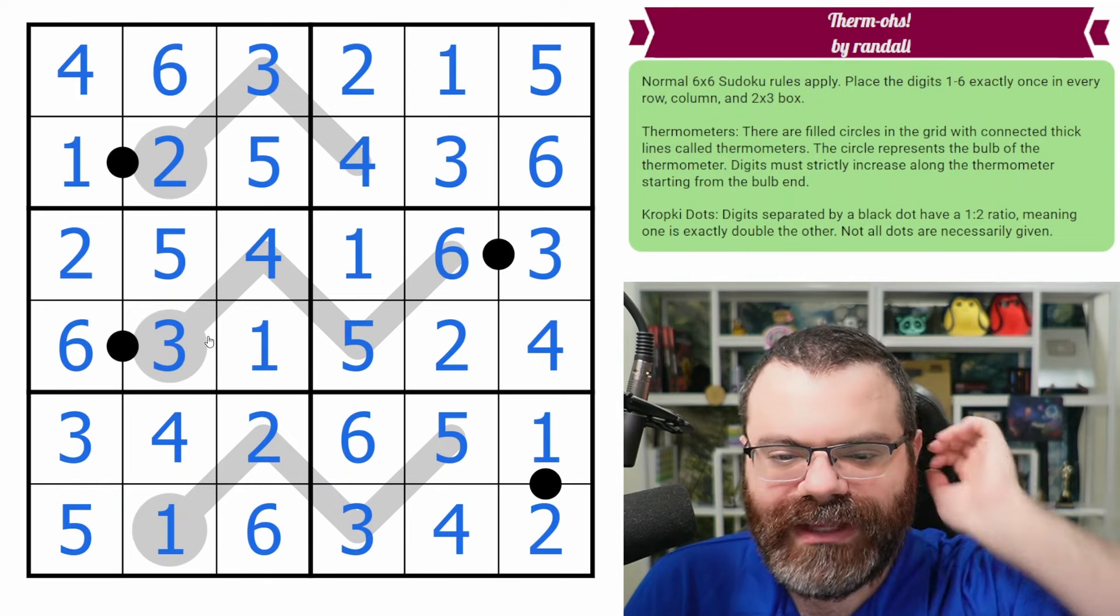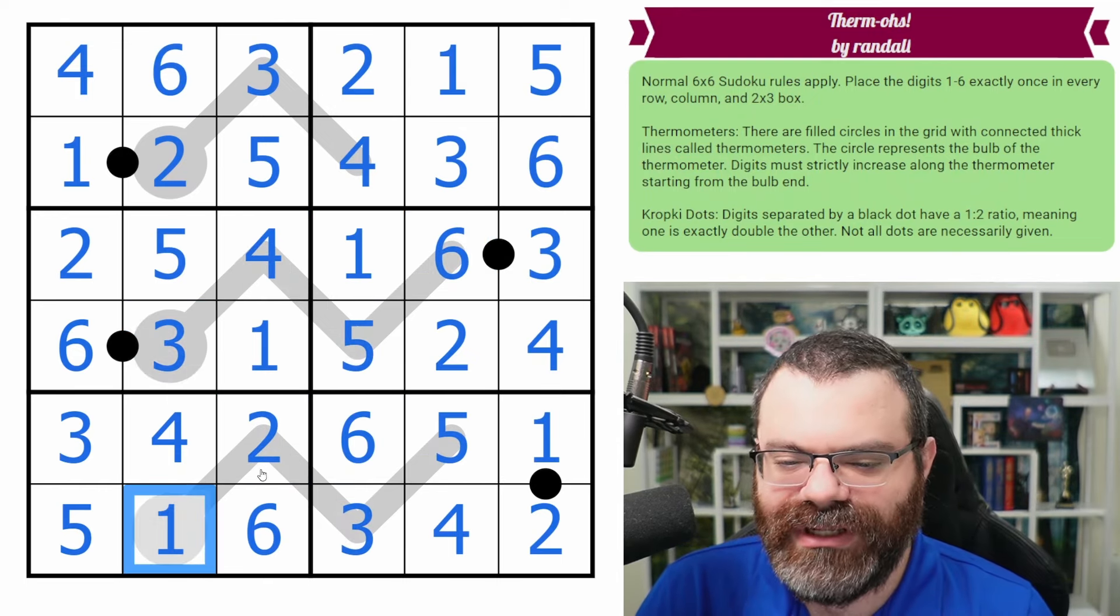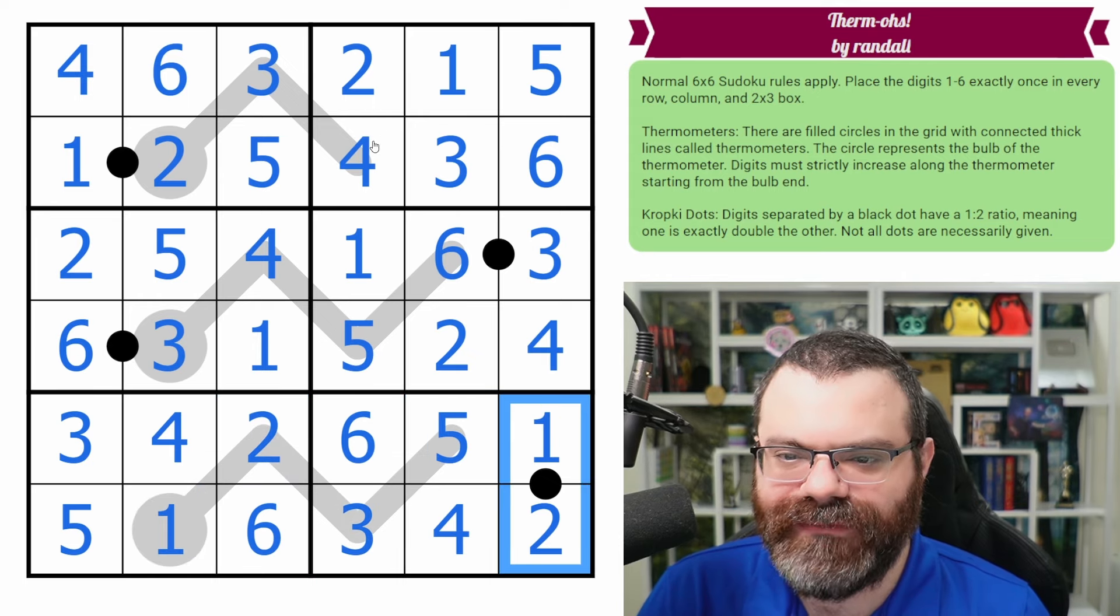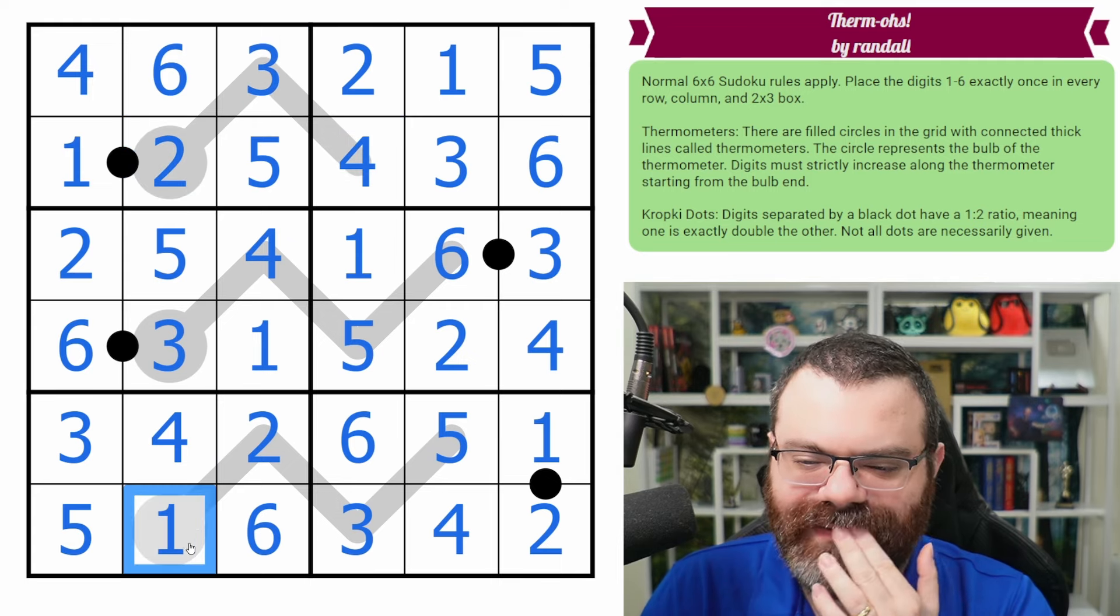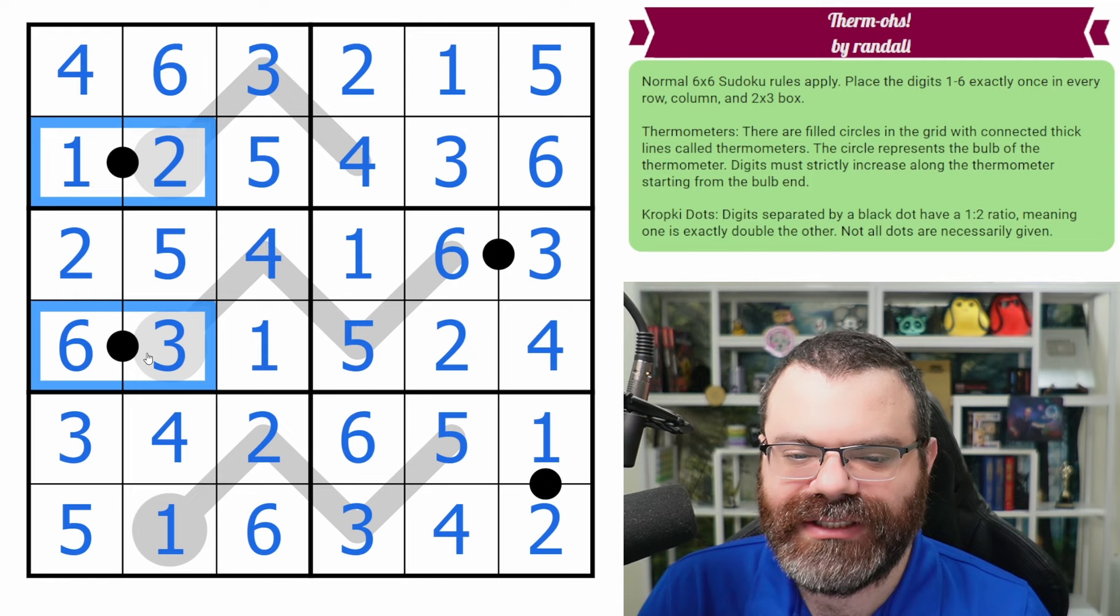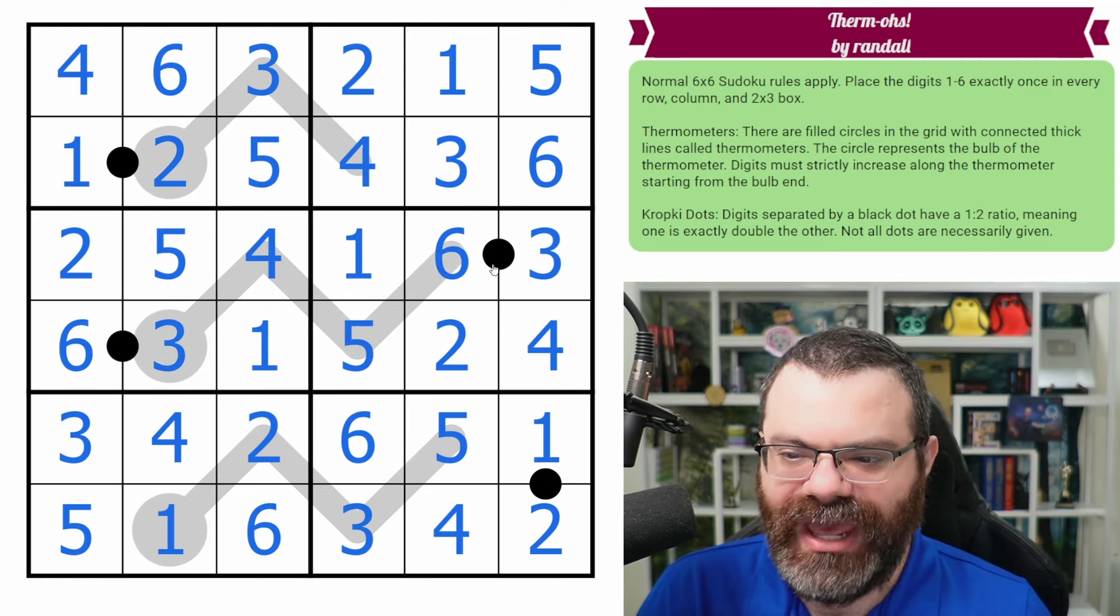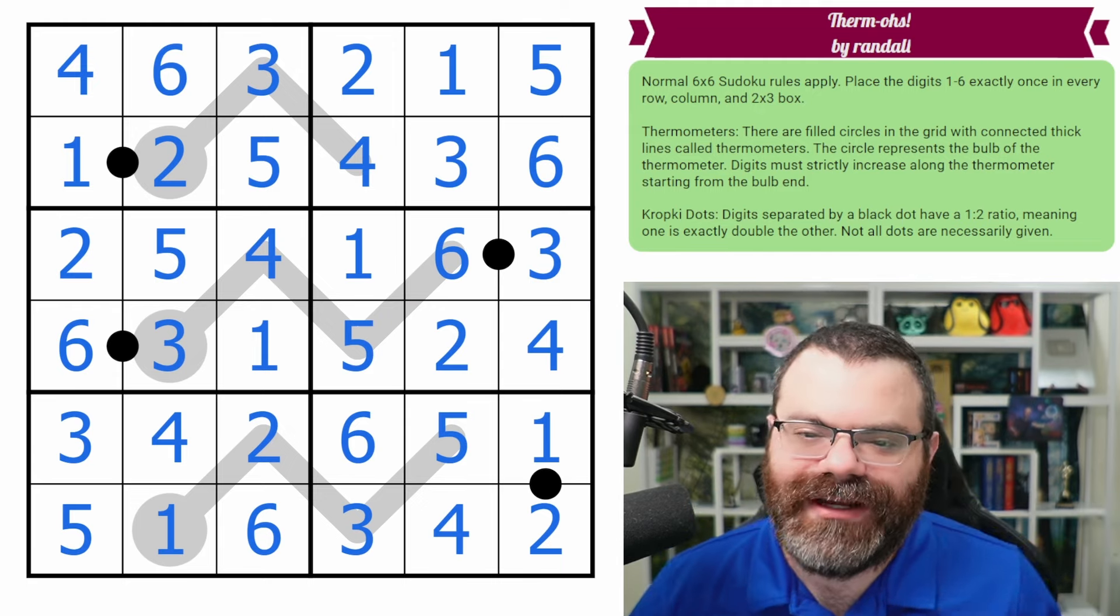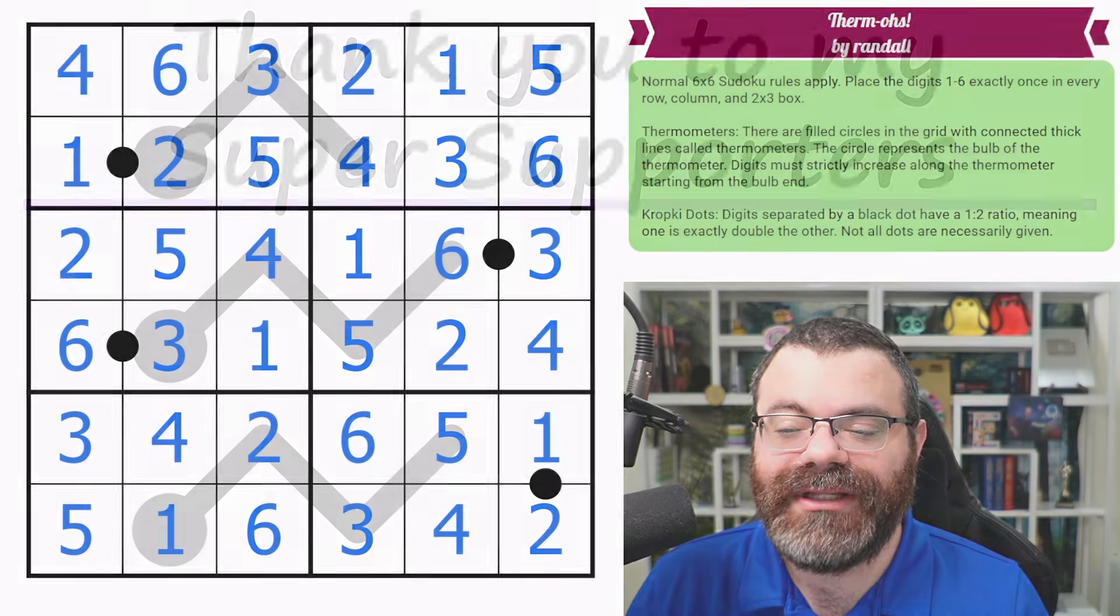That was neat, Randall. How the thermos kind of interacted with each other. So this thermo really forced this thermo, which then because of this black dot and Sudoku forced this thermo to finish, which then finished this thermo completely. That was really interesting how they kind of bounced around. Really nice use of these black dots here as well. And the roping from this black dot. So every black dot had a really interesting purpose to the solve path. Really well-crafted, Randall. I really enjoyed that. Hope you did too. And if you did, then why not leave a like, subscribe, and a kind comment below.